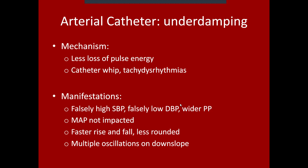Damping can tell us about the calibration of our arterial line. When you have an arterial line that is underdamped, that essentially means less loss of pulse energy along the arterial system. This is colloquially known as a "whip."